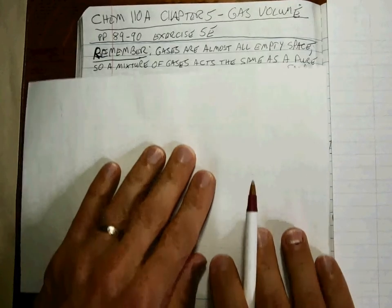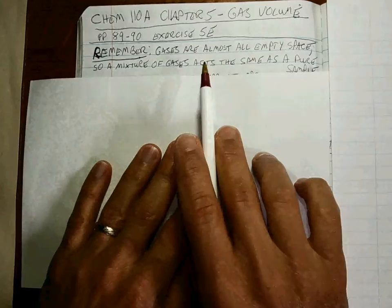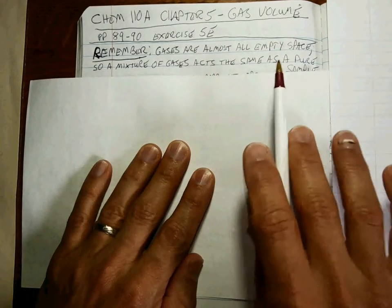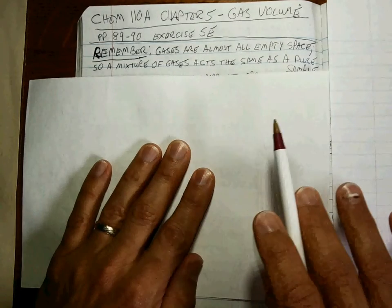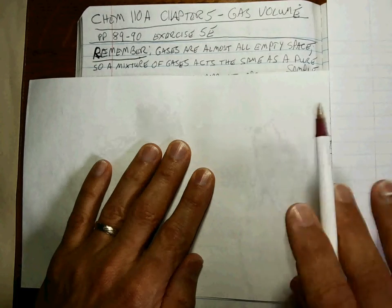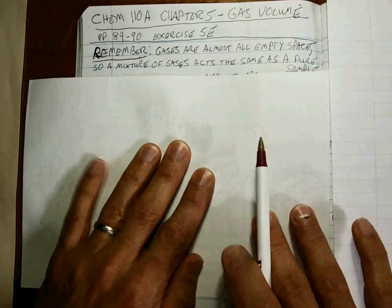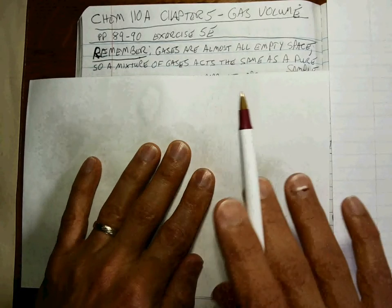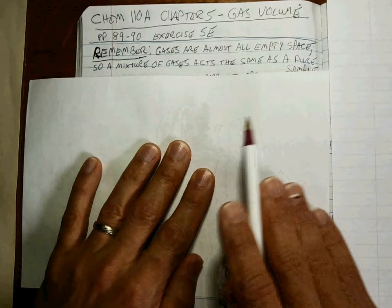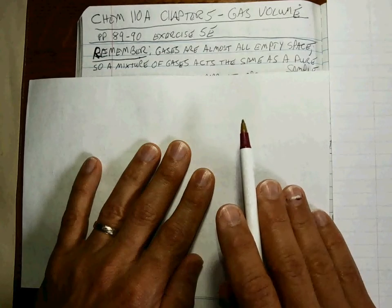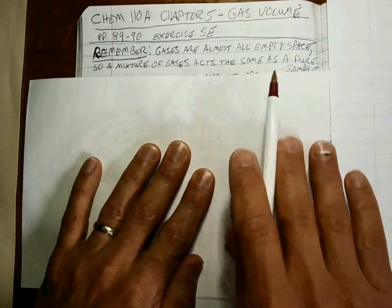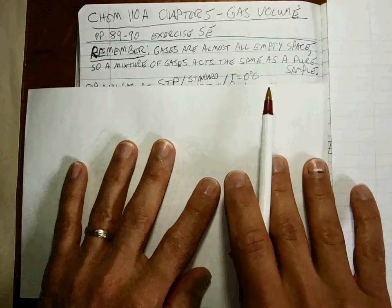Gas volume is almost all empty space. You look at a balloon and it's just a few molecules of gas bouncing around in there, but it's mostly empty space. We make the assumption that gas molecules don't interact with each other very much, which means that a mixture of gases will act the same as a pure sample.